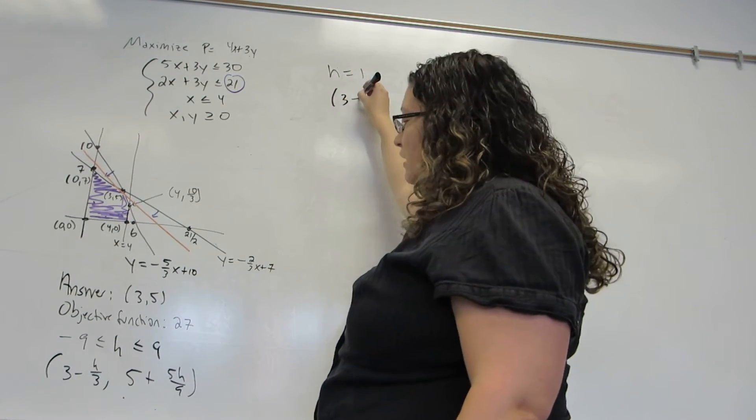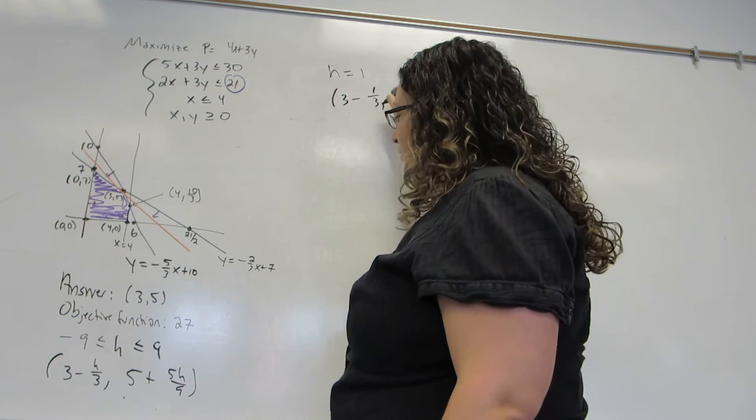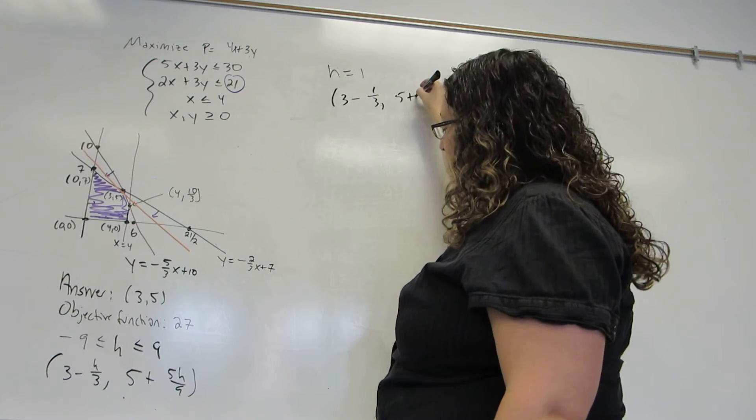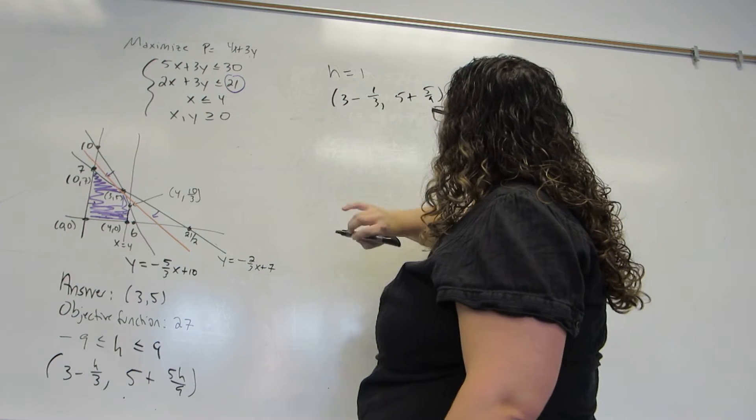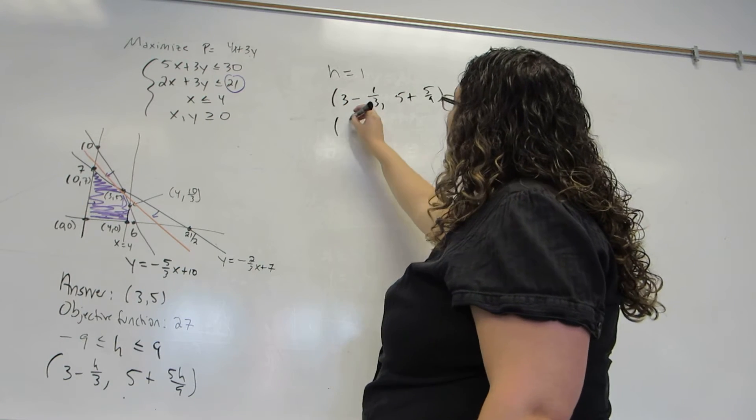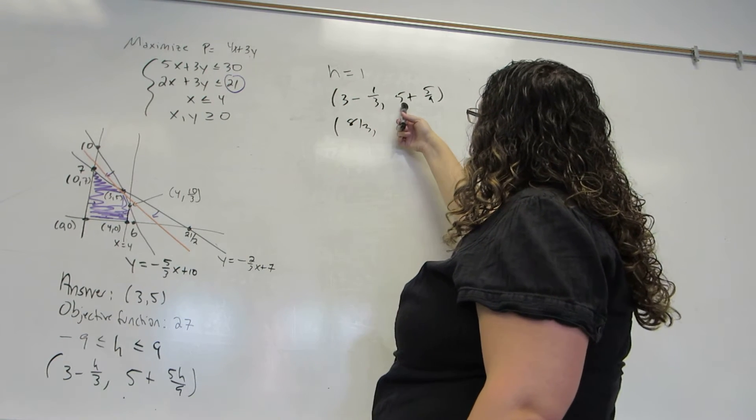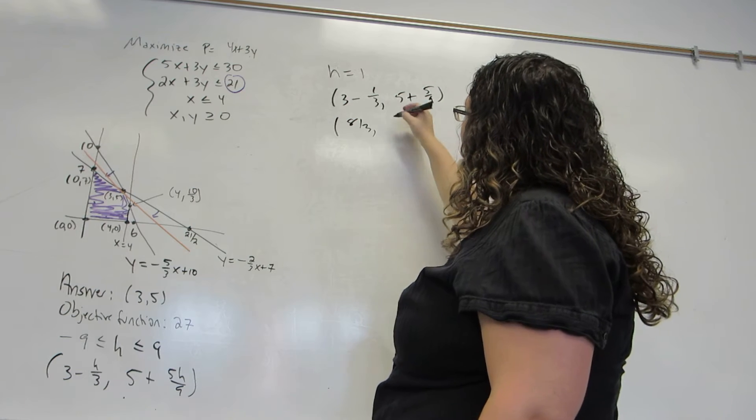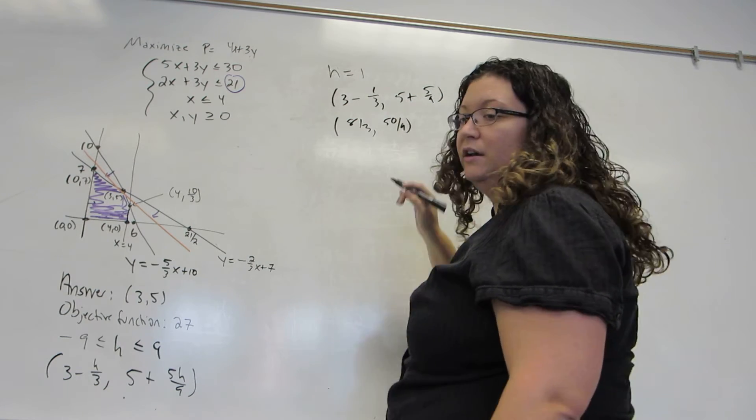So my new point will be 3 minus 1 third, comma, 5 plus 5 ninths. This is 8 thirds, comma, 5 ninths.